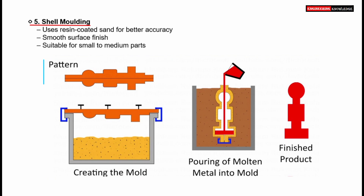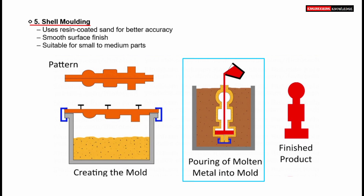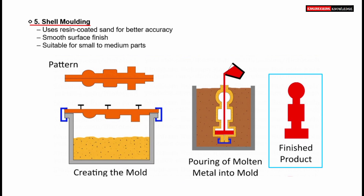The shell mold is then assembled and placed inside a flask. Molten metal is poured into the mold cavity. The metal fills the space formed by the hardened shell. Once the metal cools and solidifies, the shell is broken away to reveal the final cast product. The result is a part with excellent surface quality and high dimensional accuracy. Shell molding is ideal for producing high-quality detailed parts and is widely used in automotive and industrial applications.